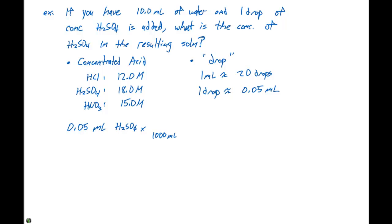We know that there are 1,000 milliliters in one liter. And the concentration of our H2SO4 is 18.0 moles of H2SO4 per liter. The milliliters cancel out, the liters cancel out. And this gives us 0.0009 moles of H2SO4.